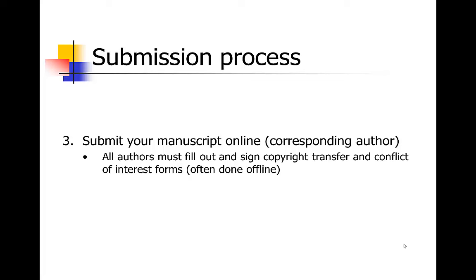Way back when I was in graduate school, it was pre-online submission era — we still had to copy the papers, make multiple copies, put them in an envelope, and send them by snail mail. Months later you'd get a letter back by snail mail. Now, you go online and there's a series of steps the system walks you through. Leave a couple of hours — it usually takes about two hours to enter all the information. Also, all authors must fill out specific forms that each journal requires, which is usually done offline, so leave time to collect those signatures.